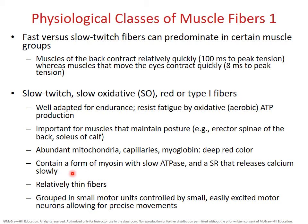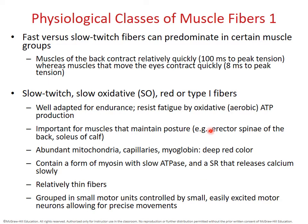Because they're not focused on fast responses, the myosin enzymes and kinases are relatively slow, giving a slower twitch duration — still measured in milliseconds but slow compared to fast glycolytic fibers. The fibers are relatively thin because power isn't the priority. They tend to be grouped in small motor units, which gives fine control over movements rather than large bursts of power.